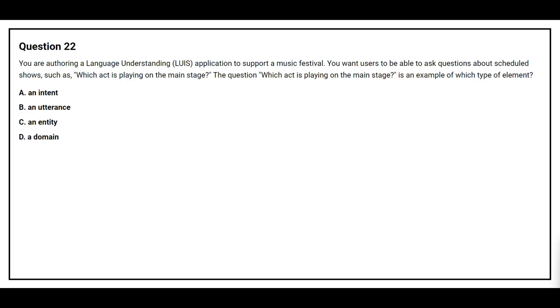Question number 22. You are authoring a language understanding application to support a music festival. You want users to be able to ask questions about scheduled shows such as which act is playing on the main stage. The question which act is playing on the main stage is an example of which type of element. Option A, an intent. Option B, an utterance. Option C, an entity. Option D, a domain.